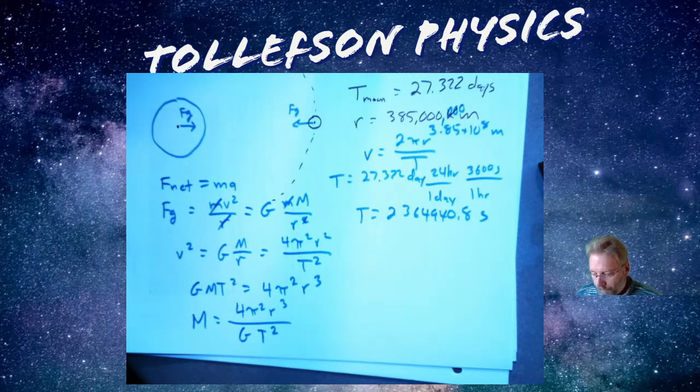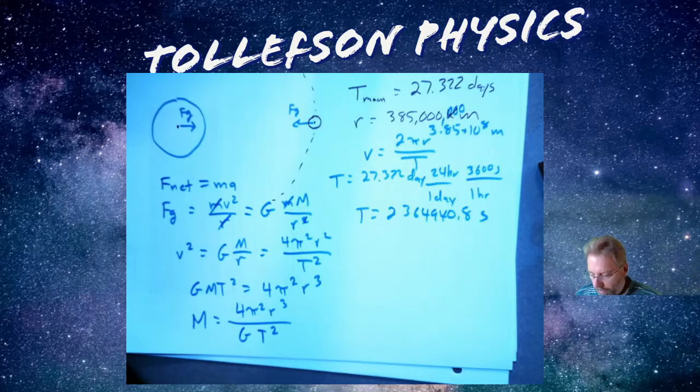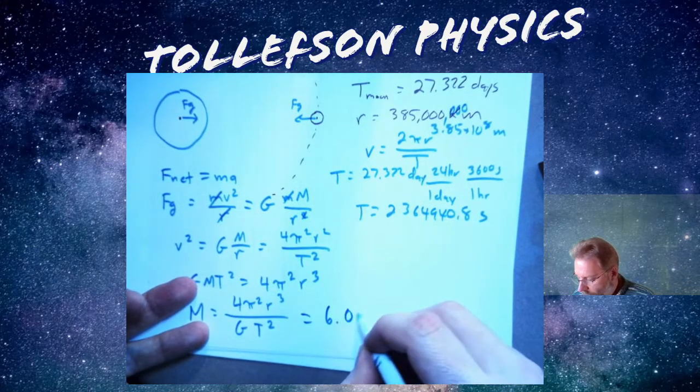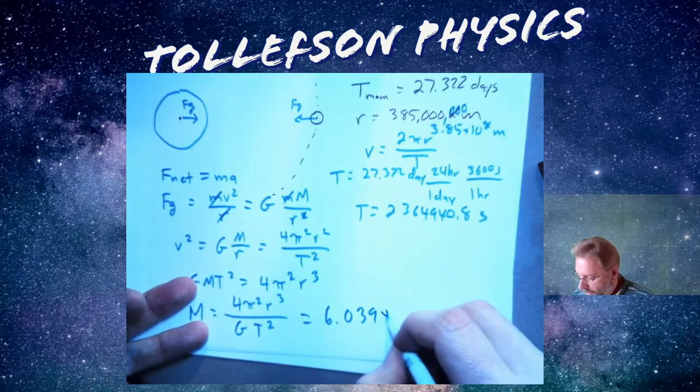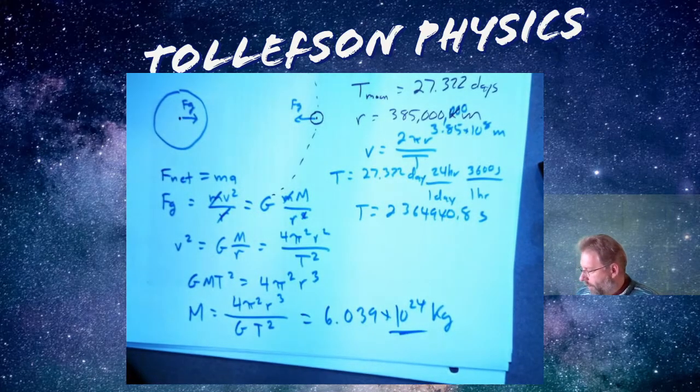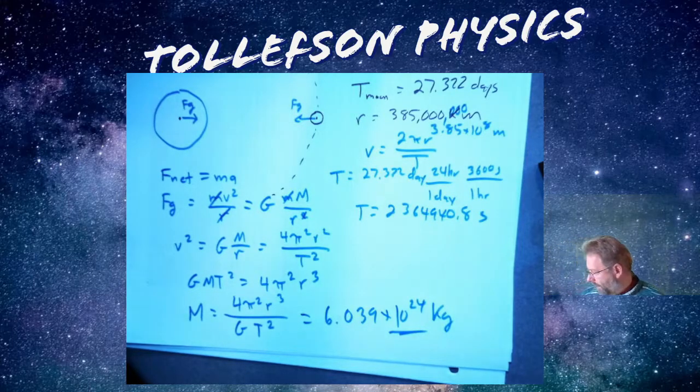Oops, wrong button. 10 to the negative 11, equals. And so I get a mass of 6.039 times 10 to the 24 kilograms.